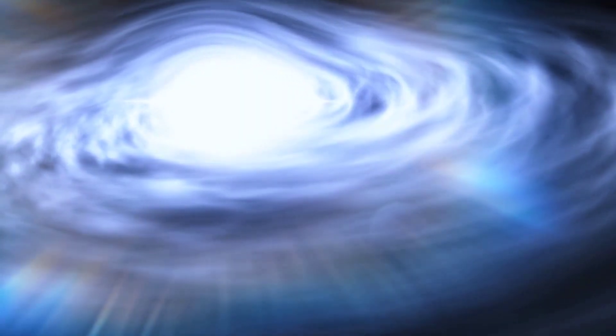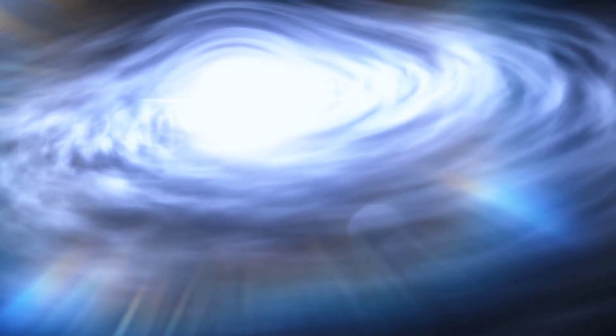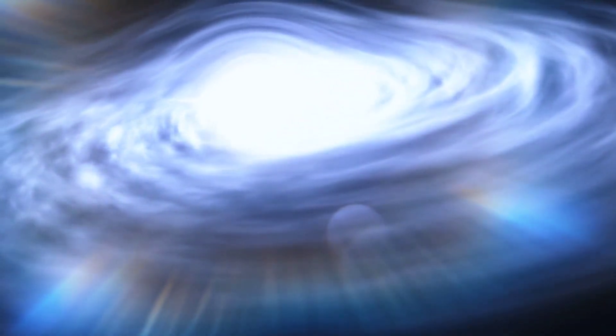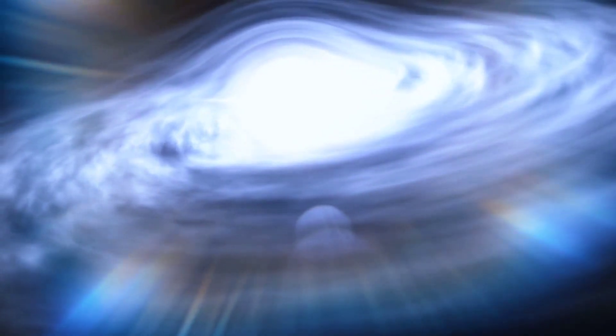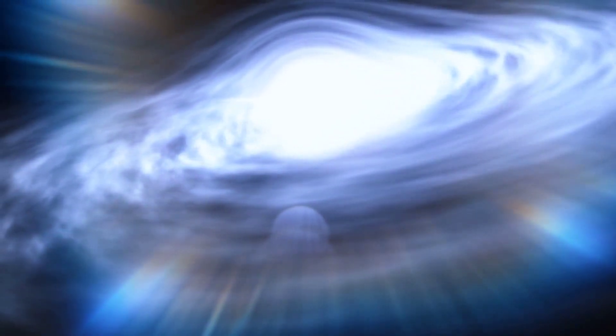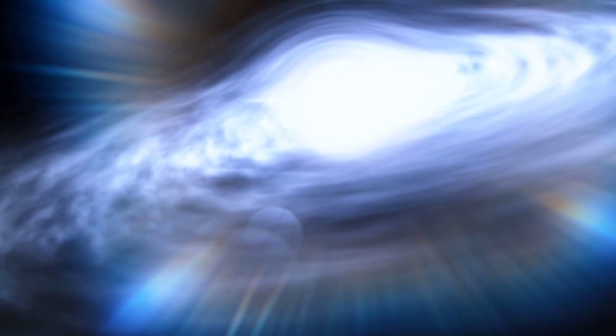Speaking of accretion disks, this is a glowing hot structure of gas and dust that spirals toward the event horizon. As matter falls towards the black hole, it heats up and emits X-rays, providing astronomers with a way to see and indirectly study black holes.